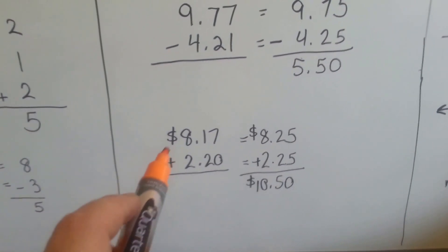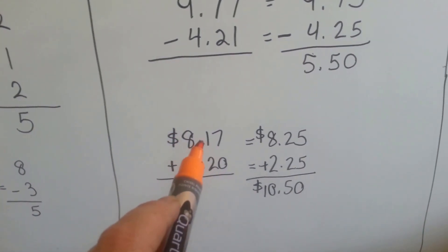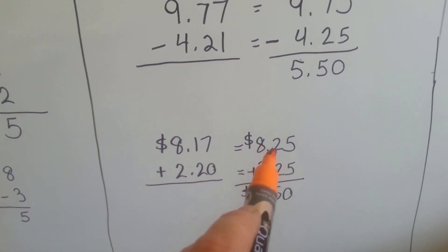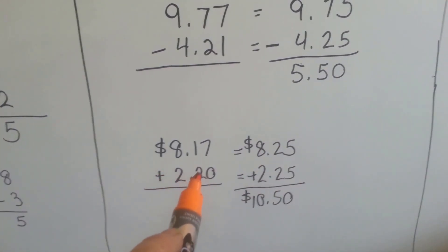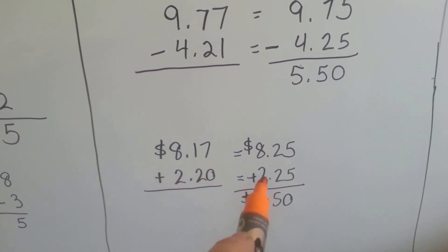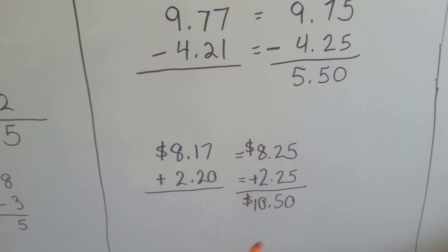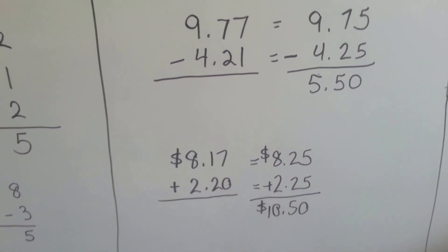If we're adding them, $8.17 can become $8.25. We're rounding it to the benchmark. And $2.20 can become $2.25 to add them quicker. So, we get $10.50.